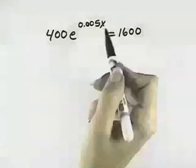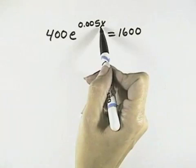We want to solve this equation with the variable in the exponent. We want to get that out of the exponent eventually.